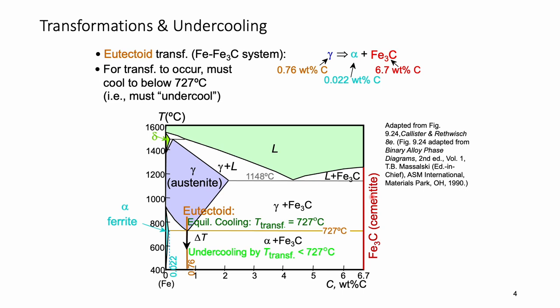In this phase diagram, here is the temperature and this is the concentration of carbon. We focus on the eutectoid point, because this is the typical composition for steels. Gamma phase, a solid phase, can transfer to alpha plus cementite as long as the processing temperature is below 727°C. This is the reaction: gamma transfers to alpha plus cementite. Clearly, gamma phase, alpha, and cementite all have different carbon concentrations. To enable this transition, we need delta T to not be zero — the processing temperature must be below 727°C.